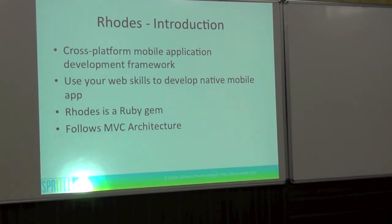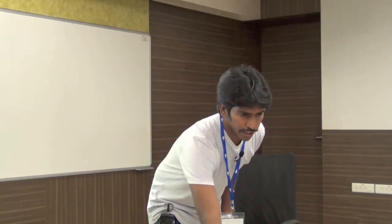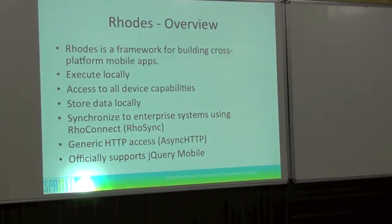RhoMobile is a cross-platform mobile application framework. You can use your web skills to write native mobile applications. It's a gem under Ruby — how many of you know Ruby or Ruby on Rails? For those who don't know, in PHP it would be like a library, in Java like a JAR file, for Python like a library. For Ruby, RhoMobile is simply a gem to get started. It follows MVC architecture. Some nice things about RhoMobile: you can execute locally, you have access to almost all device capabilities based on the smartphone, and you can store data locally — for example using SQLite in iPhone and Android.